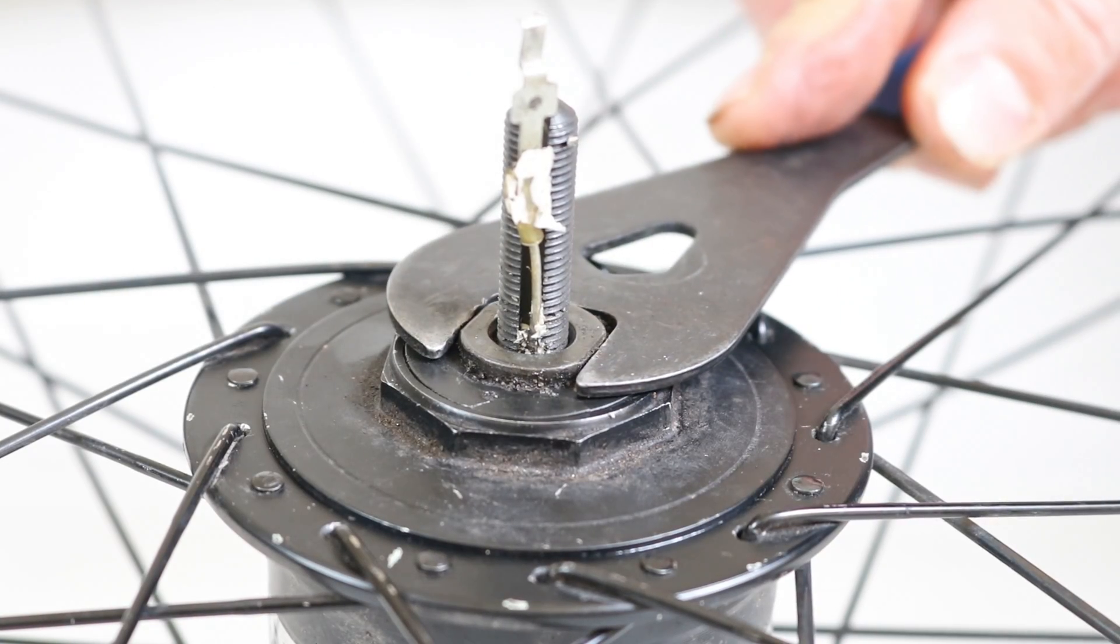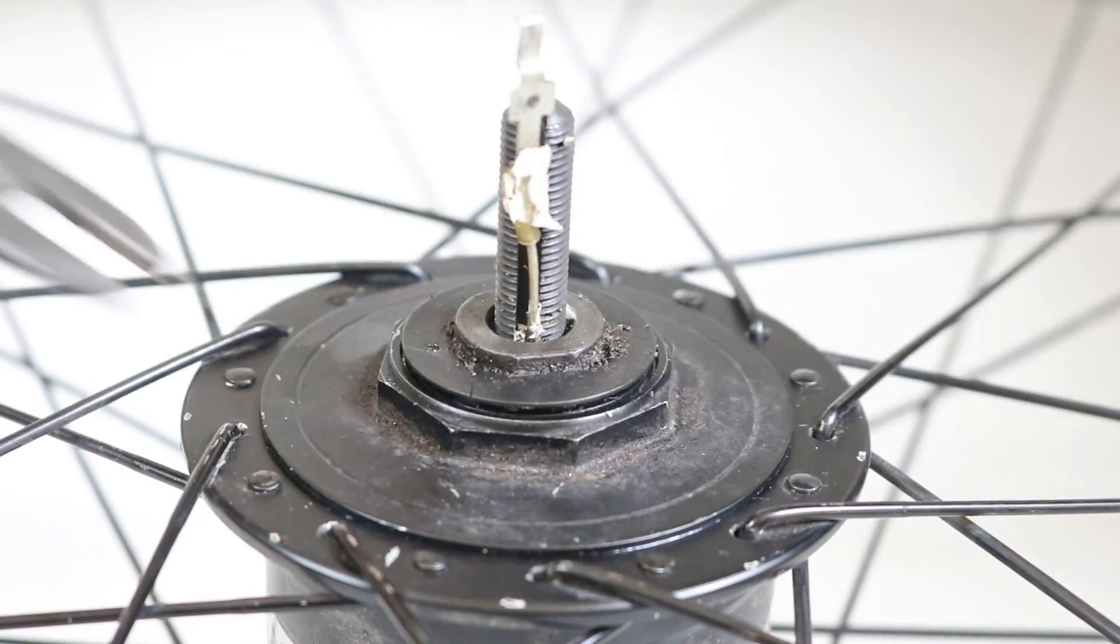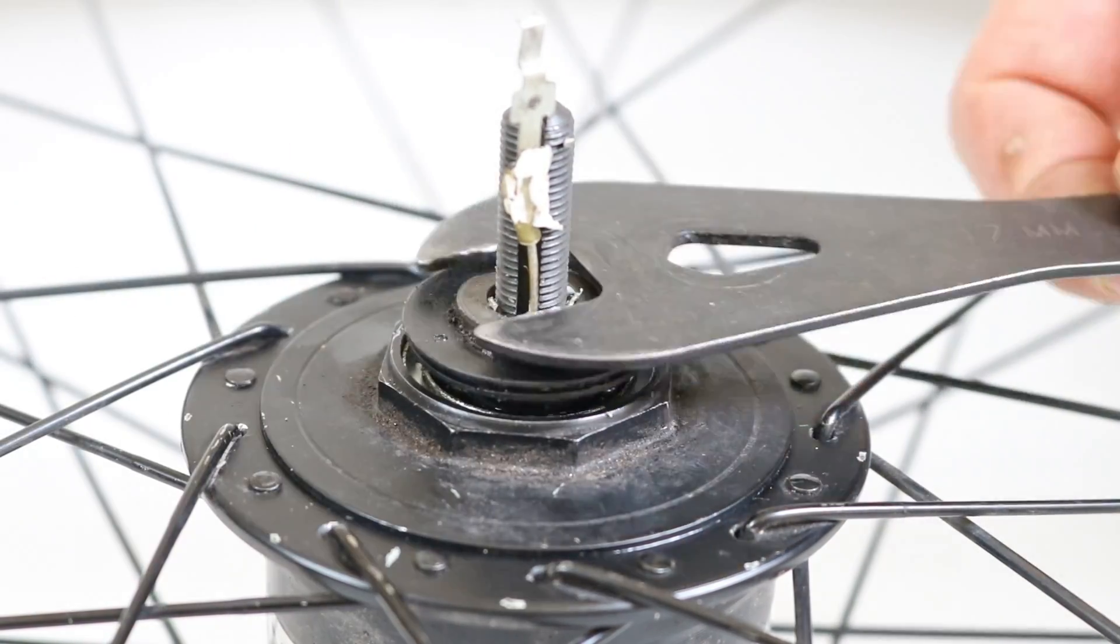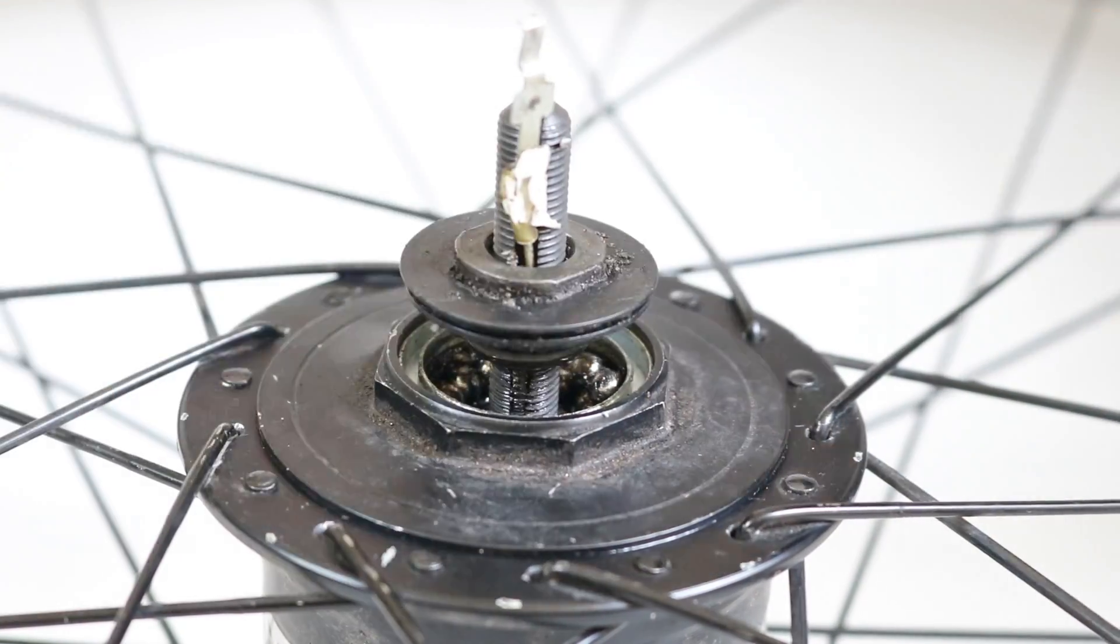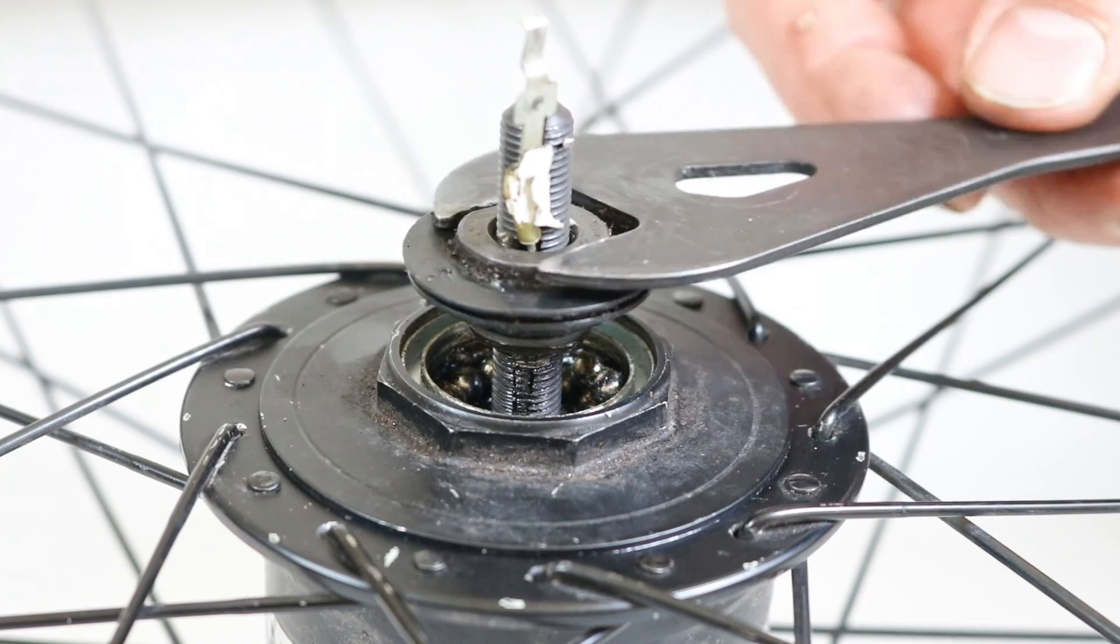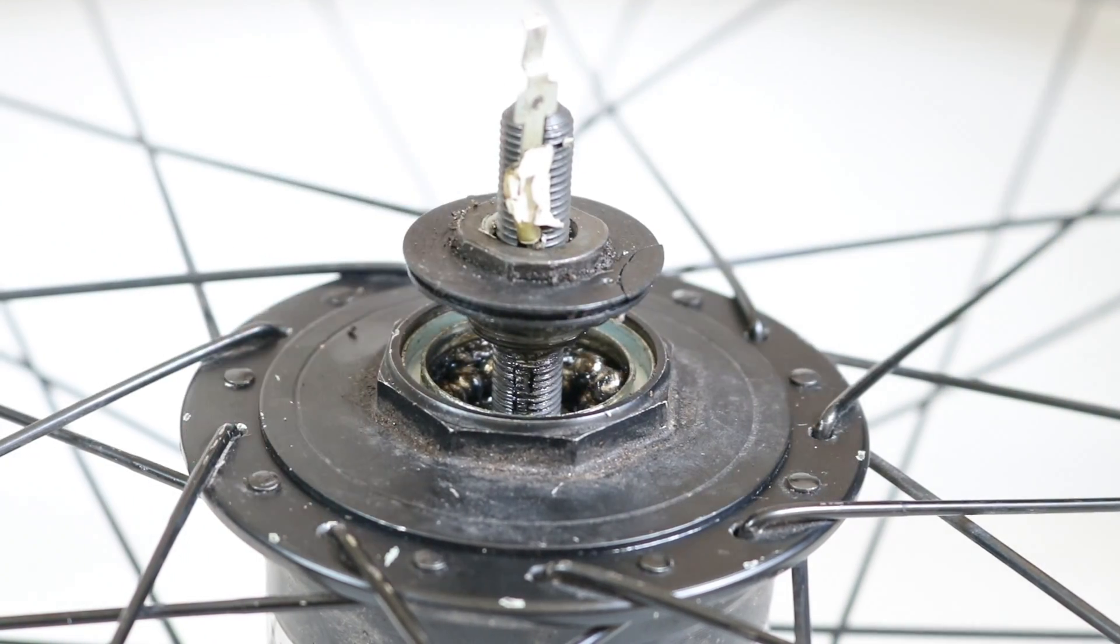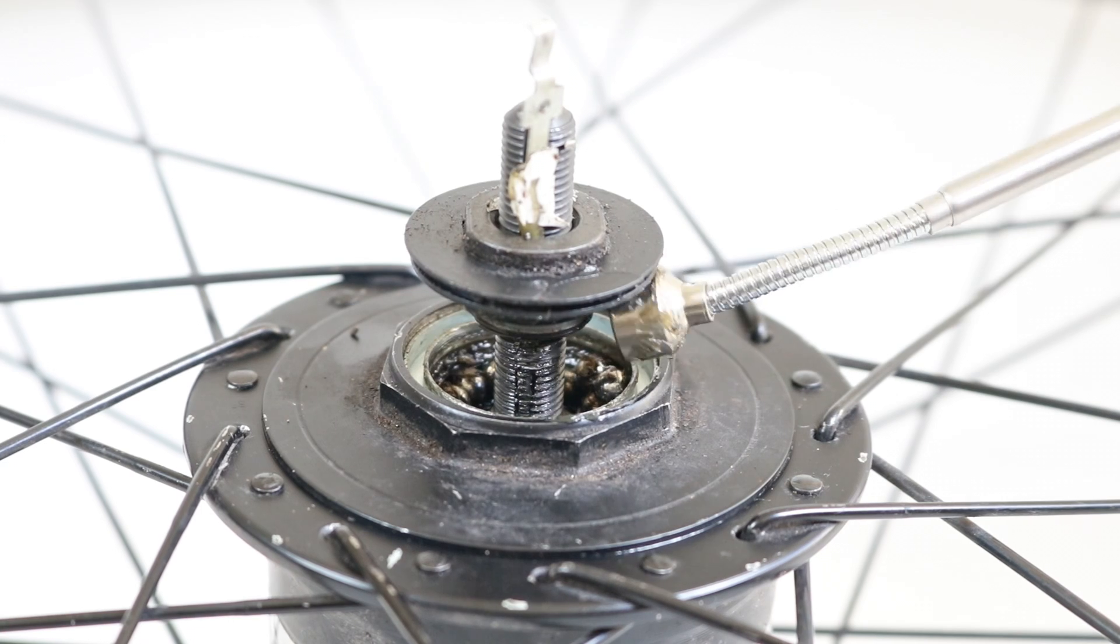Use a 17mm cone spanner to undo the right hand side cone. Unscrew it enough to gain clear access to the bearing cup without damaging the terminal plate. Use a magnetic pickup tool to remove all the bearings from the bearing cup.